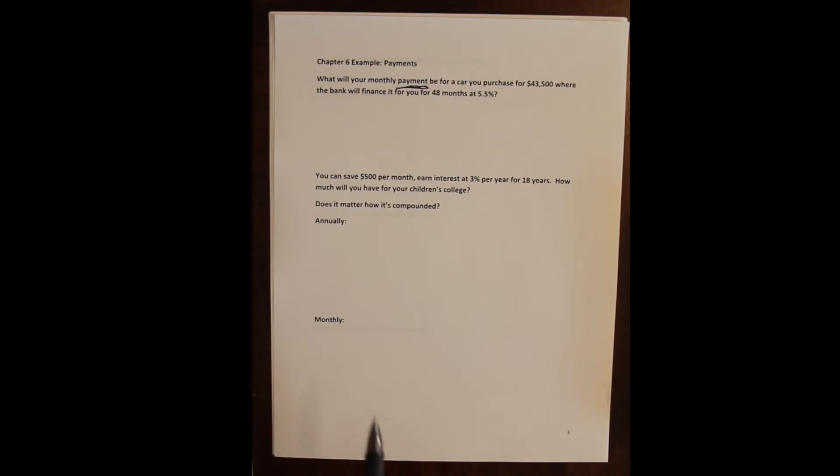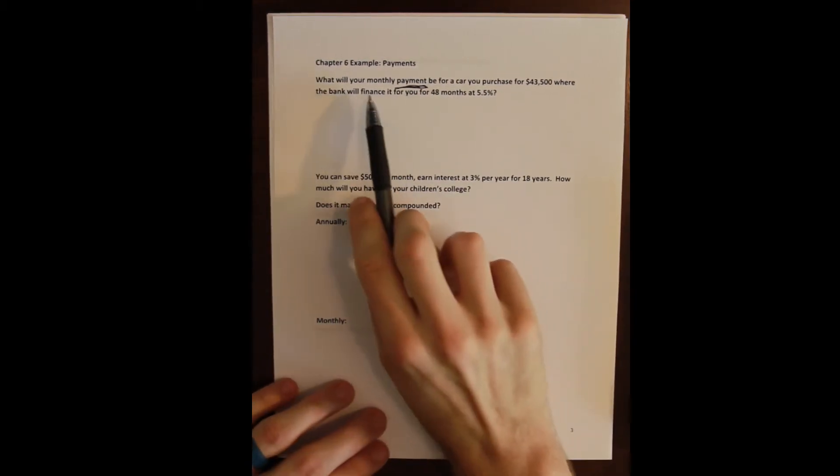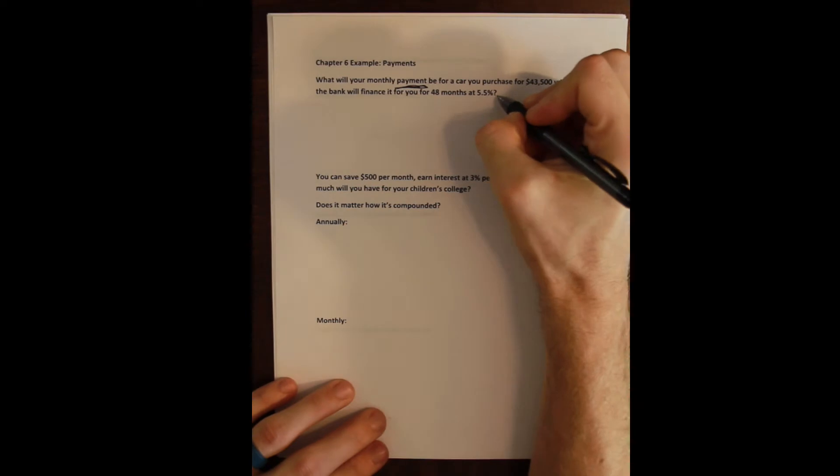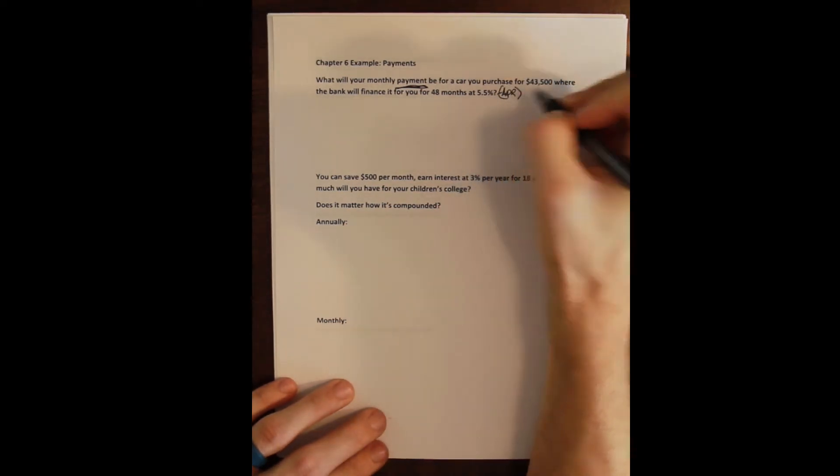The other thing that we got to be careful for is that the payment is going to determine or be determined by the compounding period. So again we have a monthly payment but we're given, remember from the lecture here, we're given the APR. This is the APR which is the annual percentage rate. Remember that this is given by law. That's why we have to do it this way.